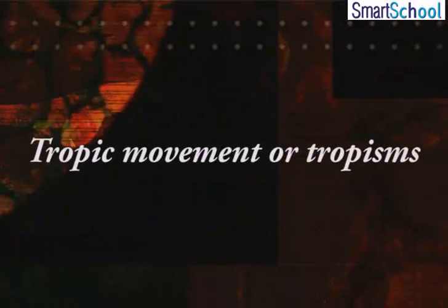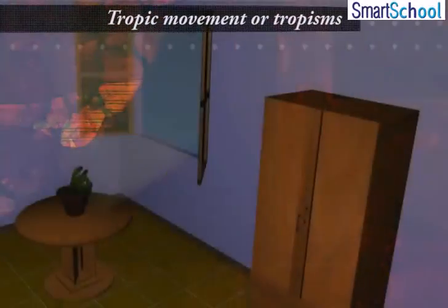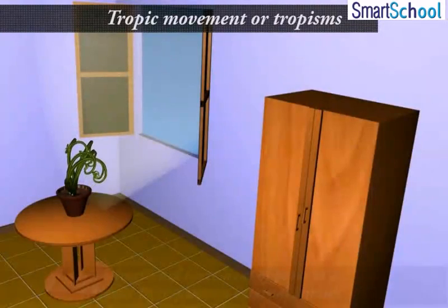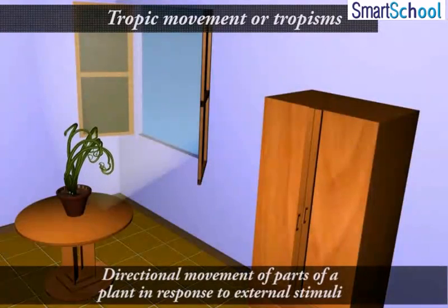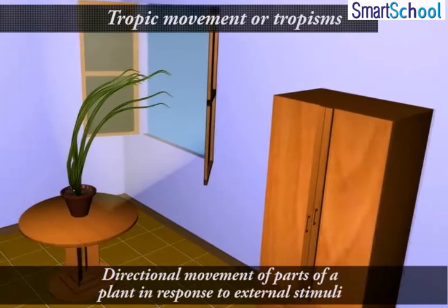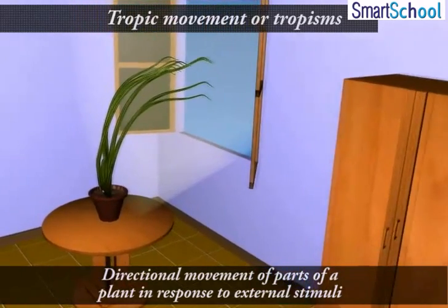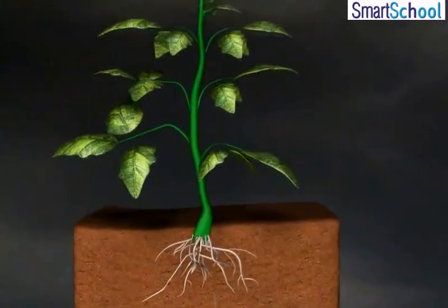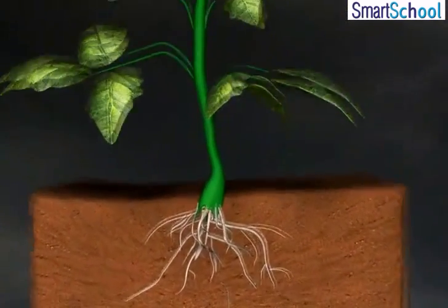Tropic Movement or Tropism: Tropic movements are the induced growth movements of curvature that occur due to differential growth. These are directional movements or orientations that occur in response to external stimuli such as light, force of gravity, chemicals, water, etc. Let us understand tropism in detail.